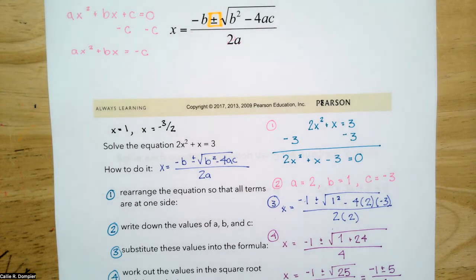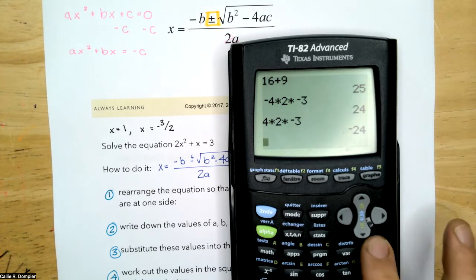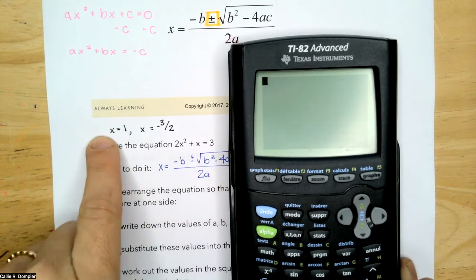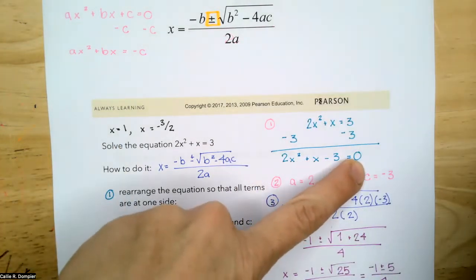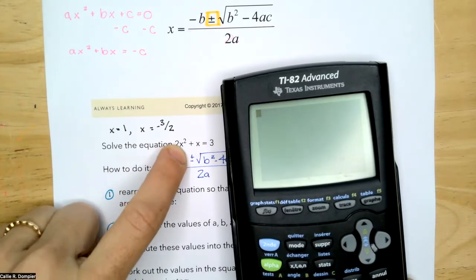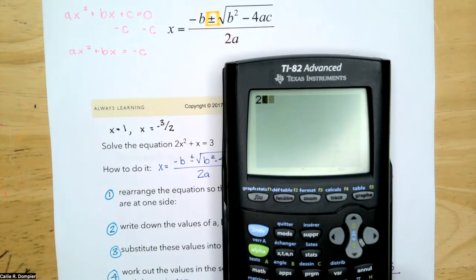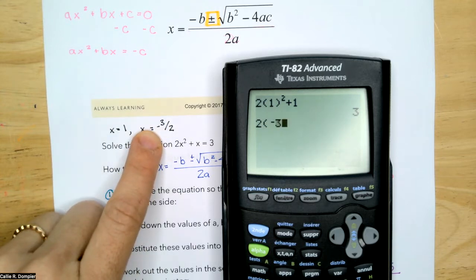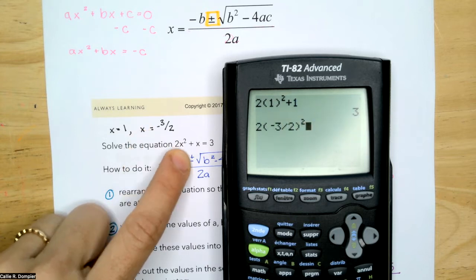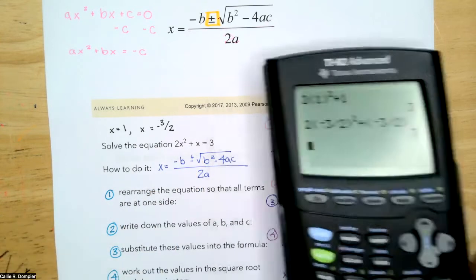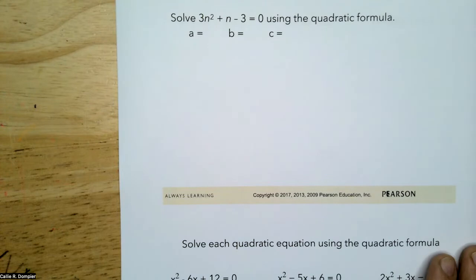To check: substitute back into the original equation. 2 times 1 squared plus 1 equals 3 ✓. And 2 times negative 3 halves squared plus negative 3 halves also equals 3 ✓. You don't need to use the quadratic formula if you can factor the equation.